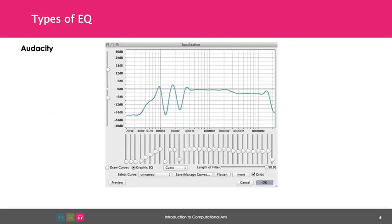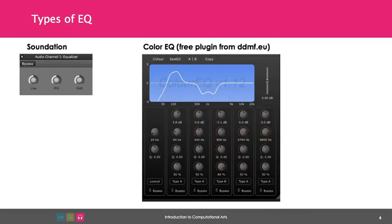Audacity has a graphic EQ built in, which you can see by going to the Equalization effect and clicking on Graphic EQ. Most software EQs are parametric. Unfortunately, Soundation does not have a good EQ, so those using Soundation can either use the EQ in Audacity or install a plugin such as Color EQ.